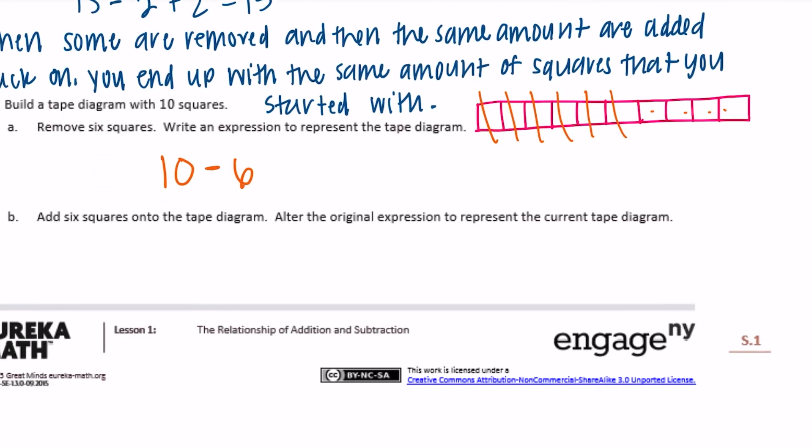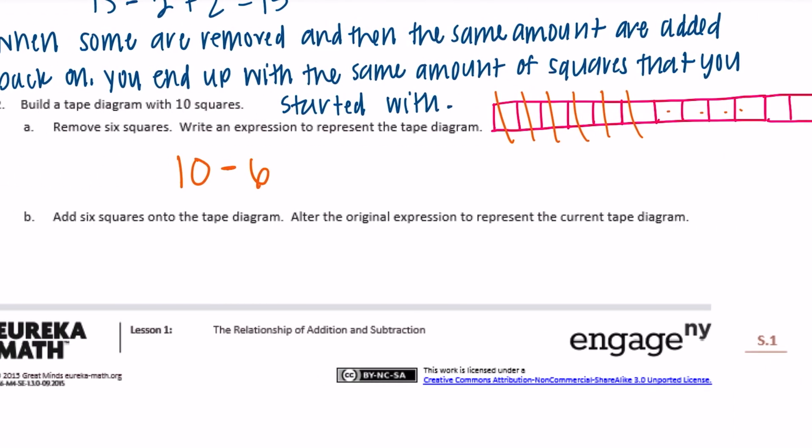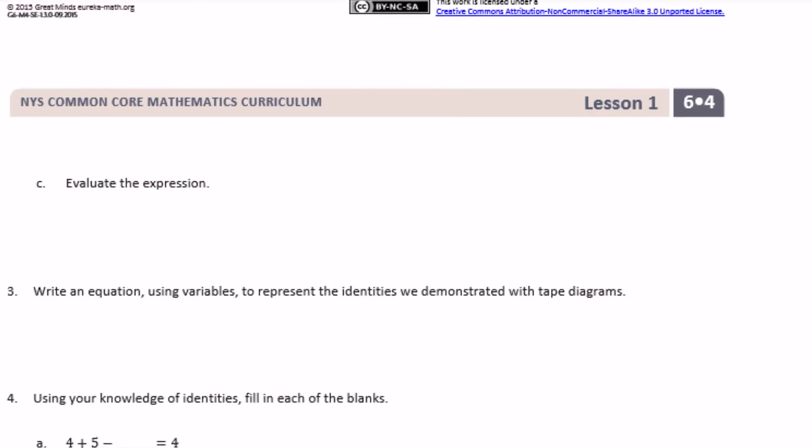Add 6 squares back onto the tape diagram after the original expression to represent the current tape diagram. So now if we wanted to add 6 back on, how many are we ending up with? So we're back to having 10. So we did 10 and then we subtracted 6 and then we added 6 more. So that represents the tape diagram that we did right there. Evaluate the expression. So 10 minus 6 plus 6 is equal to 10. So we just ended up right where we started.